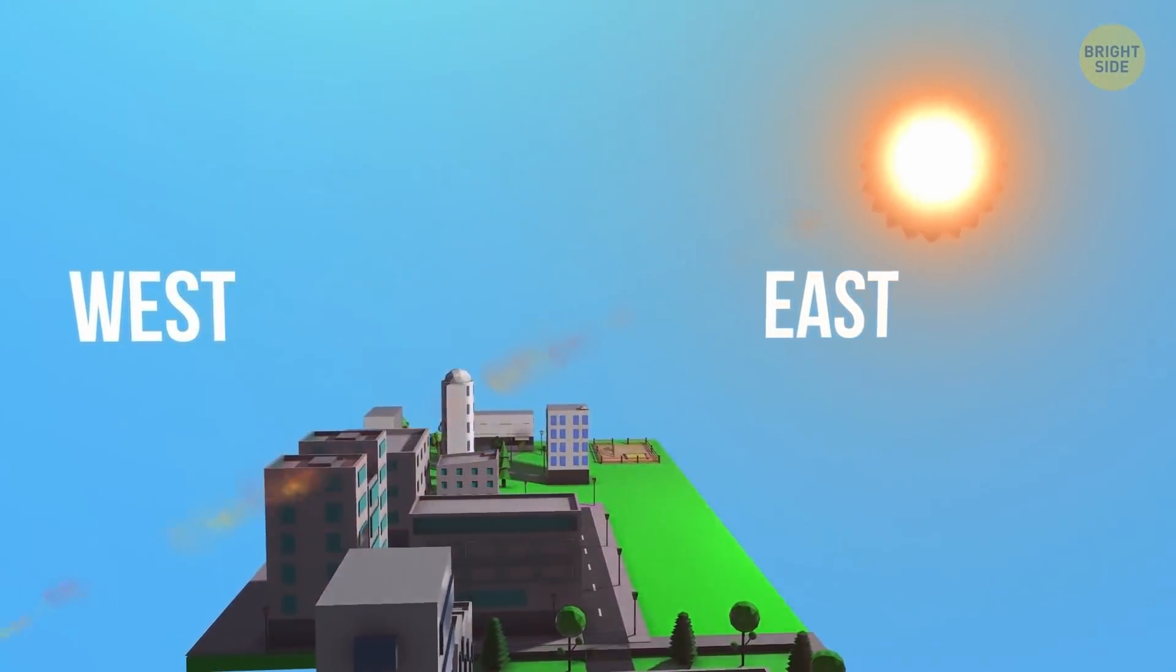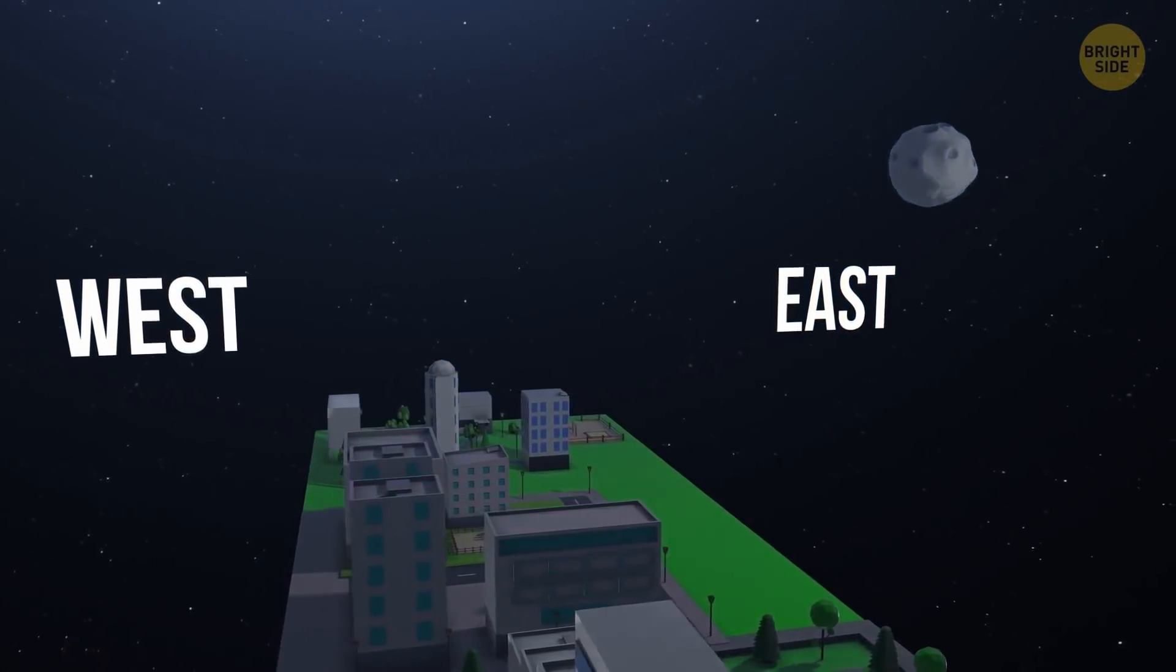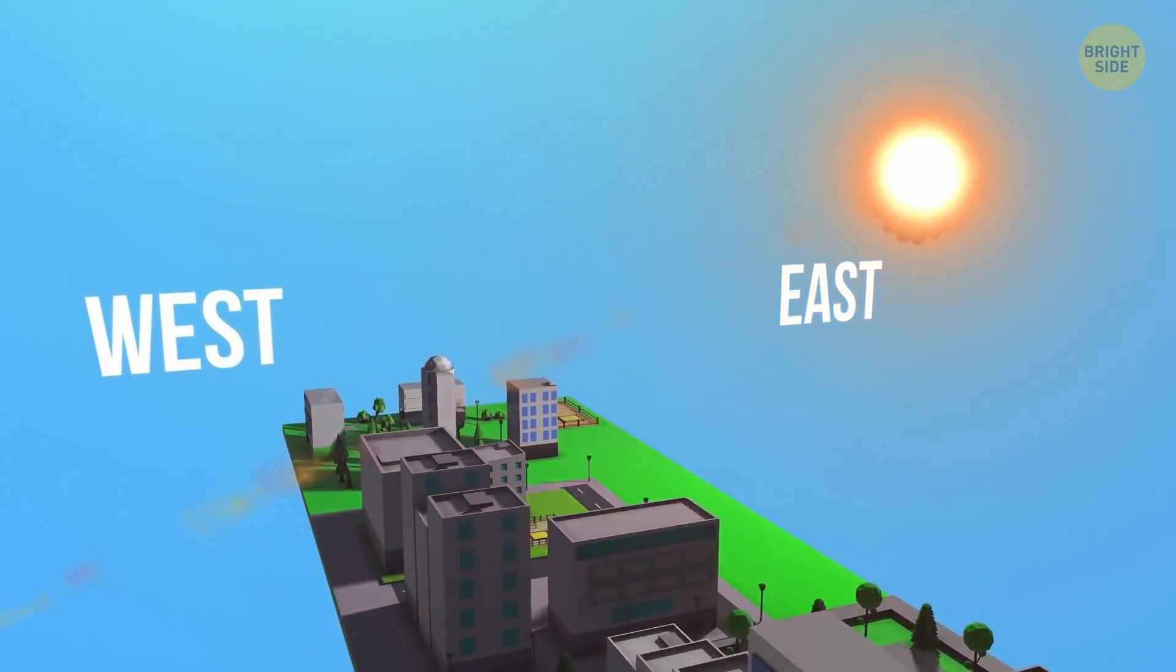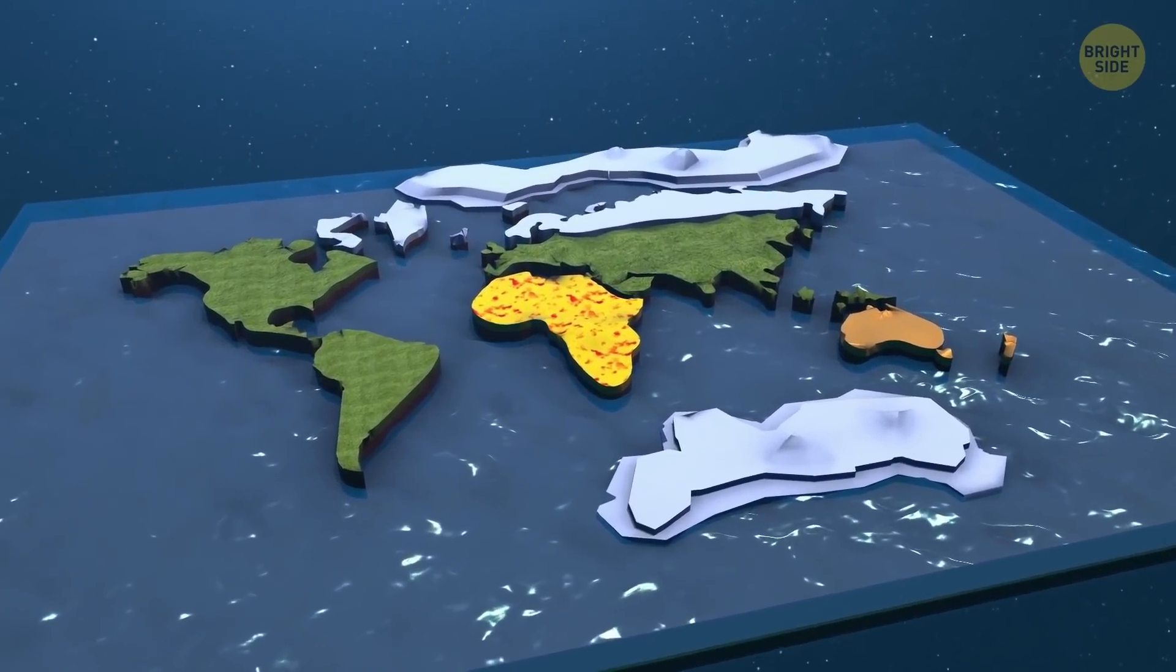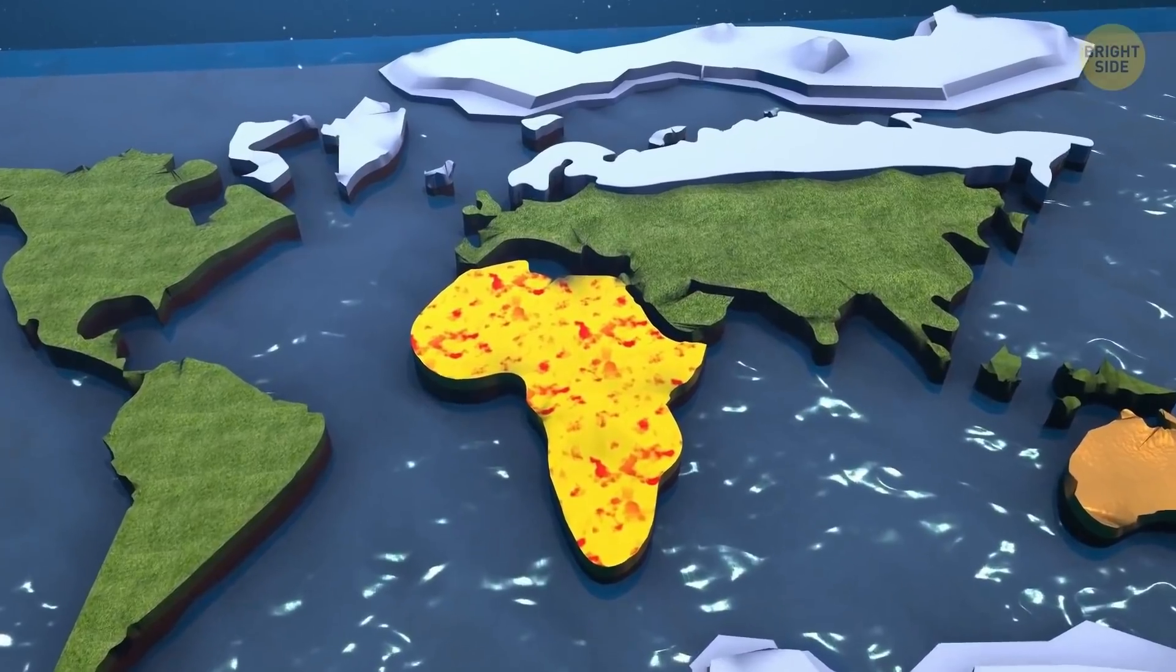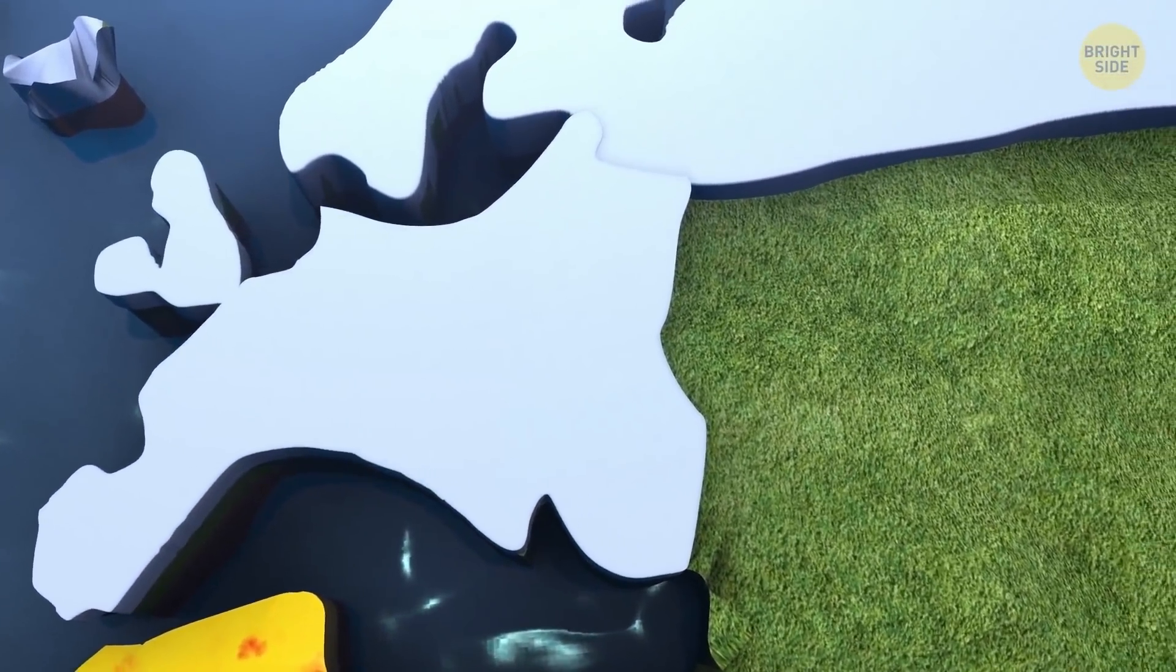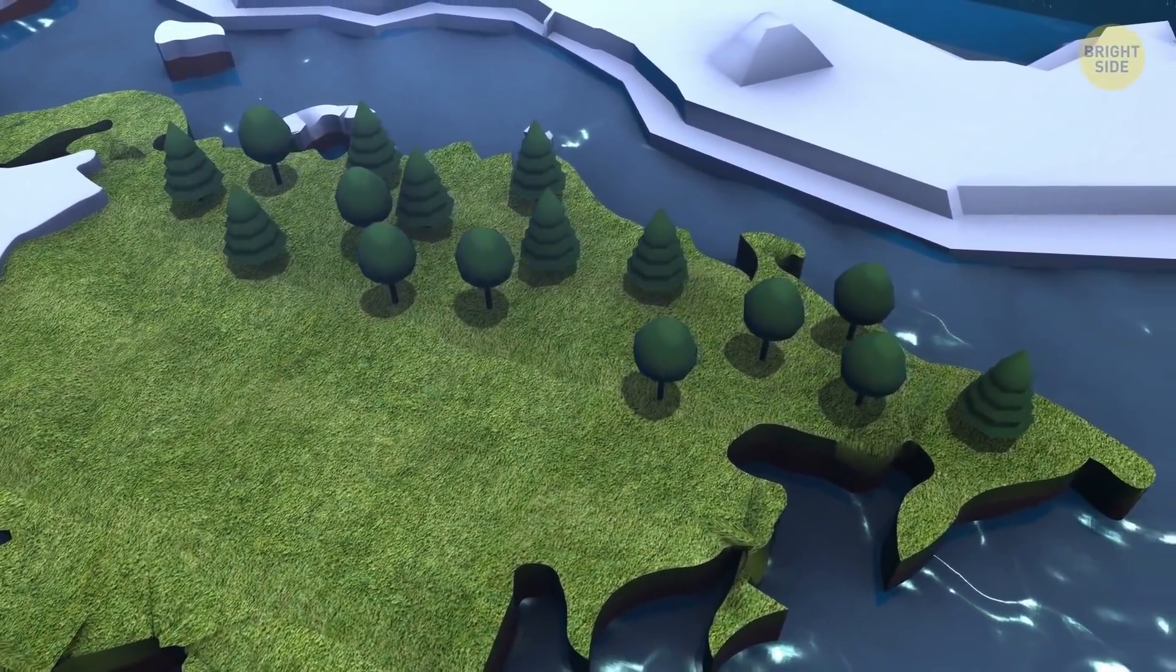The thing is that the different spinning direction of the planet would create unexpected weather conditions on all the continents, and the Earth itself would be a totally different place. Some regions of the world would be colder than they are now. For example, Western Europe would be plagued by severe freezing winters every year. And vice versa, Russia would warm up and lose the title of one of the coldest countries in the world.